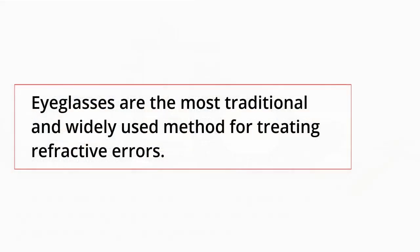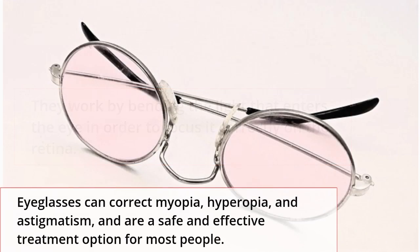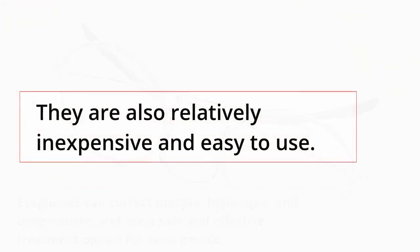Eyeglasses are the most traditional and widely used method for treating refractive errors. They work by bending the light that enters the eye in order to focus it correctly on the retina. Eyeglasses can correct myopia, hyperopia, and astigmatism, and are a safe and effective treatment option for most people. They are also relatively inexpensive and easy to use.